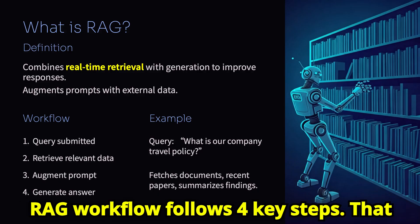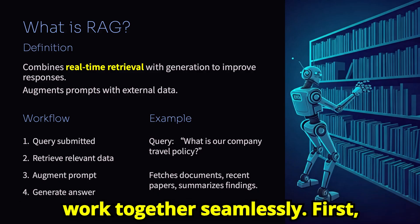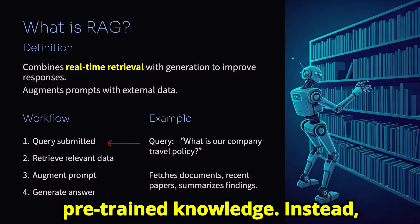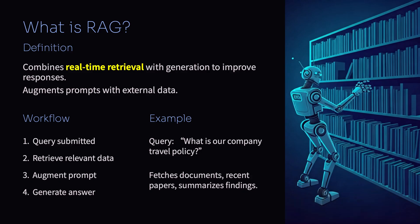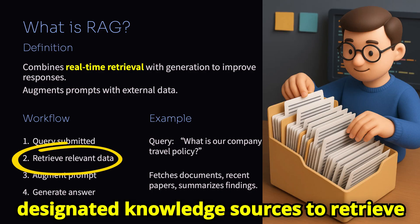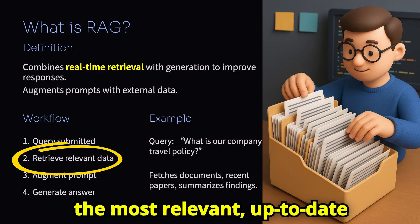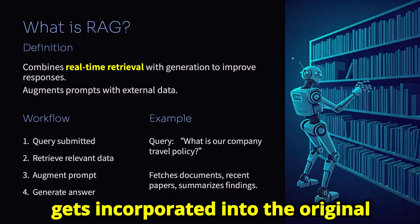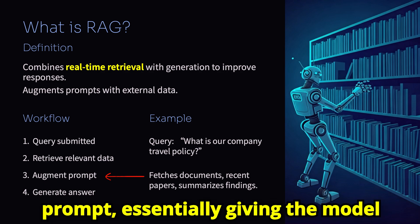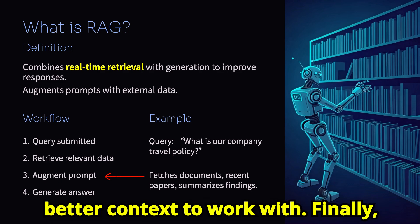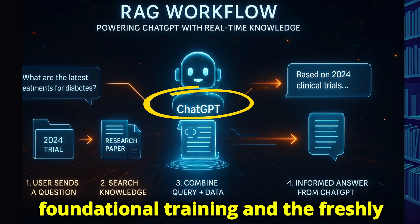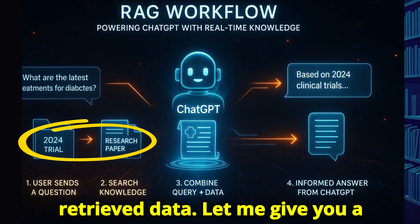The RAG workflow follows four key steps that work together seamlessly. First, when a user submits their query, the system doesn't just rely on the model's pre-trained knowledge. Instead, it actively searches through your designated knowledge sources to retrieve the most relevant, up-to-date information. This retrieved data then gets incorporated into the original prompt, giving the model better context to work with. Finally, the language model generates its response, now informed by both its foundational training and the freshly retrieved data.